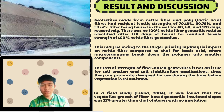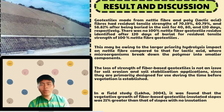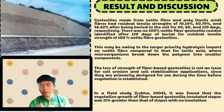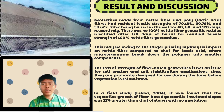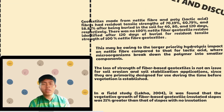In a field study from LECA in 2004, it was found that the vegetative growth of fiber-based geotextile-insulated slopes was 21% greater than that of slopes with no insulation. This improvement in soil quality resulted from a 32% increase in organic carbon content due to geotextile microbial degradation in soil. In the present study, it was shown that soil degraded by geotextile comprising 25% nettle fiber and 75% polylactic acid was almost 3.7 times more fertile than those without geotextile degradation.